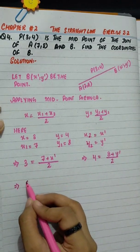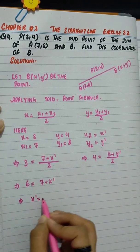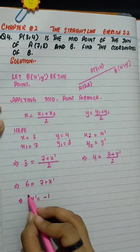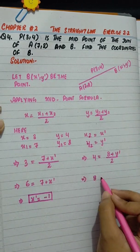2 multiplies here, so 6 equals 7 plus x', and x' value is minus 1. 2 multiplies here...